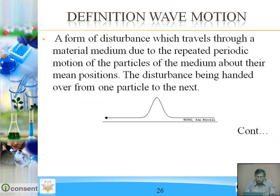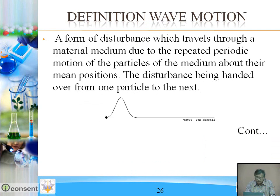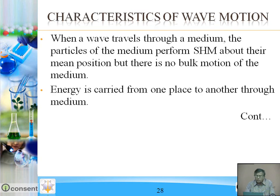Definition of wave motion: a form of disturbance which travels through a material medium due to the repeated periodic motion of the particles of the medium about their mean position, the disturbance being handed over from one particle to the next.